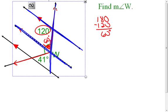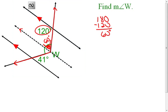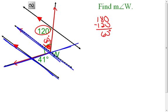Now let me eliminate a lot of these lines. This time I'm going to look at these two as my parallel lines, and this is going to be my transversal. I'm going to look at the 41 degree angle, and I notice this angle here is an alternate interior angle with the 41 degree angle. Therefore, since the lines are parallel, alternate interior angles are congruent — so this is going to be a 41 degree angle.